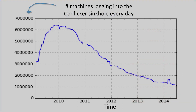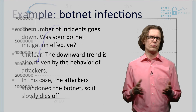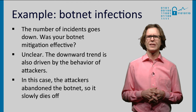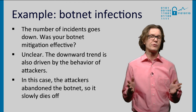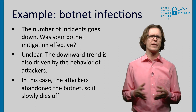If you would use data this way, you would see something like this — this is real data. On the vertical axis, you see the number of infected machines that show up in the sinkhole every day. The horizontal axis is time. Over time, you see a clear downward trend. So was your mitigation policy effective? It's unclear. The downward trend could also be caused by attacker behavior. And indeed, that's what happened here — the criminals abandoned the botnet, so it is slowly dying off.